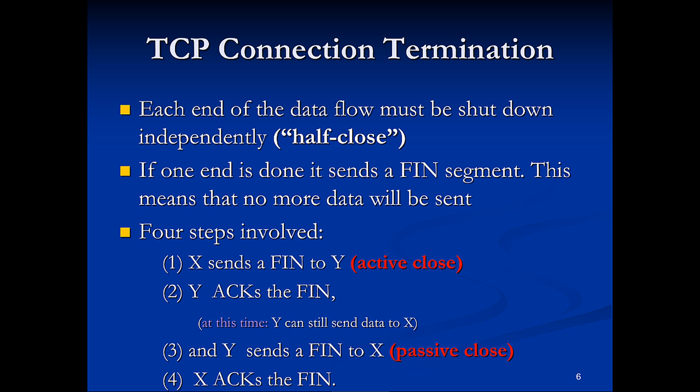Each end of the data flow must be shut down independently — meaning half closed. If one end is done, it sends a FIN or finish segment, meaning no more data will be sent. This involves four steps: X sends a FIN to Y; Y acknowledges the FIN. At this time, Y can still send data to X — that's called actively closed. In the passively closed case, Y sends a FIN to X, and X acknowledges the FIN.